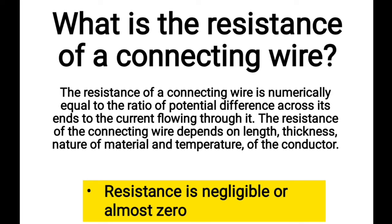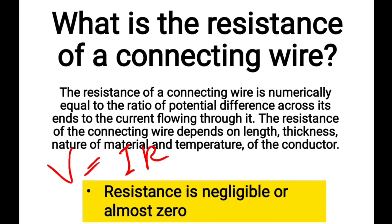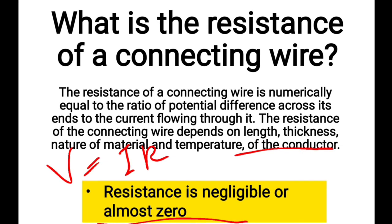Question 4: What is the resistance of a connecting wire? Resistance is numerically equal to the ratio of potential difference across the ends of the conductor to the current flowing through it — V equals IR. The resistance of a connecting wire depends on length, thickness, nature of material, and temperature. Ideally, it should be negligible or zero so maximum current can flow.